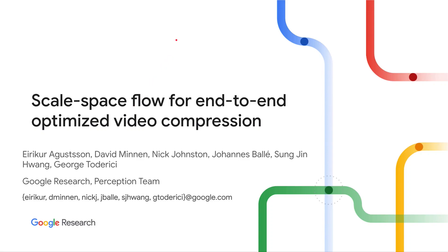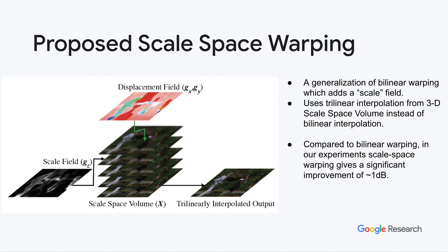We propose scale space flow for end-to-end optimized video compression, which generalizes optical flow and bilinear warping by adding a scale field, which allows to adaptively blur and warp an image at the same time.